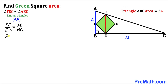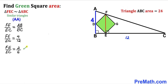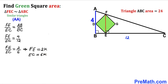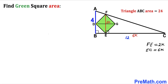So FE divided by EC equals 4 divided by 12, which reduces to 1/3. We can express this as FE = 2k and EC = 6k for some constant k. Our task is now to find the value of k. So EC = 6k and FE = 2k.